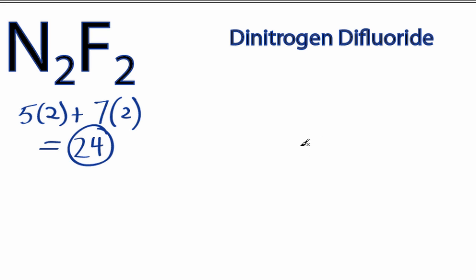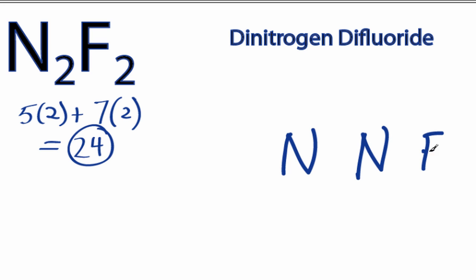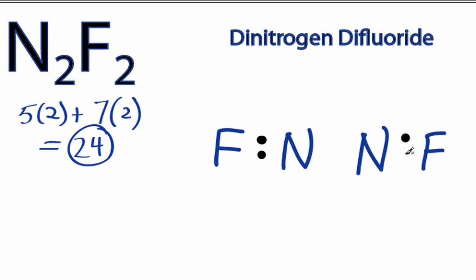The nitrogens are the least electronegative, so we'll put those at the center, and then we'll put the fluorines on the outside. We have 24 valence electrons for N2F2. We'll put 2 between the fluorines and the nitrogens to form chemical bonds, and then between the 2 nitrogens.